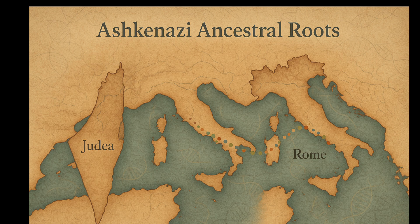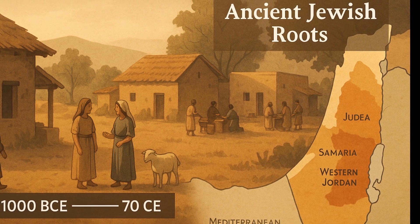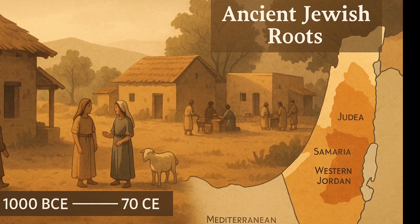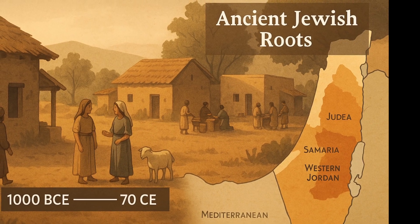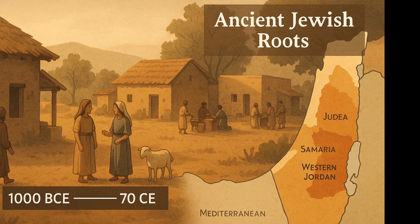Around 40% of my ancestry comes from the Levant and broader Middle East, specifically regions that include modern-day Israel, Judean Samaria, and Western Jordan. This reflects ancient Jewish roots that go back to the early Israelite period, well over 2,000 years ago.